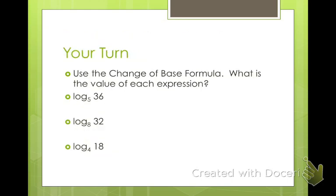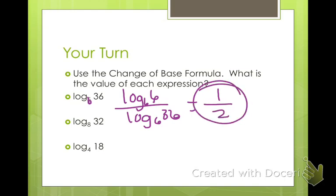And moving right along. Let's do a couple of these. Let's use our change of base formula. So what's the value of each expression. So log base 5 of 36. Well, I think that's supposed to be log base 6. Is it? Now I'm confused. Let's change that to a 6. We'll do that one first. Log base 6 of 36. Well, what base do 6 and 36 have in common? Well, it's obviously 6. So log base 6 of 6 divided by log base 6 of 36. We get 1 over 2, 1 half. Answer. Easy.